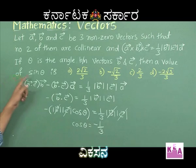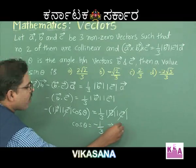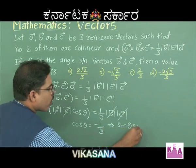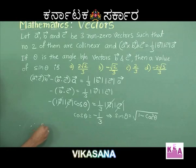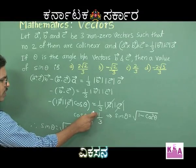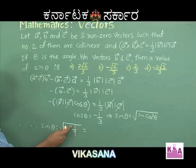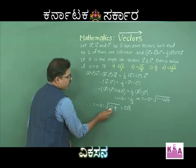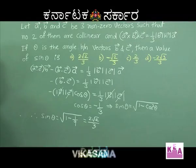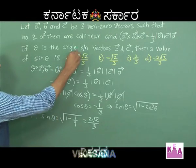Now, to find sin θ given cos θ = −1/3, we apply the formula sin θ = √(1 − cos²θ). So sin θ = √(1 − 1/9) = √(8/9) = 2√2/3. Therefore the correct option is option A: sin θ = 2√2/3.